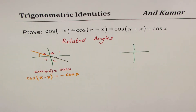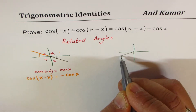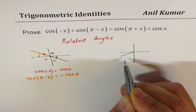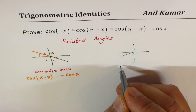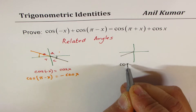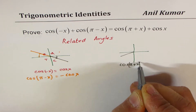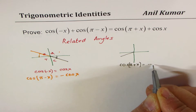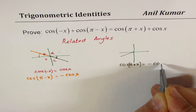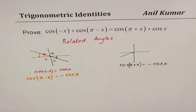Now let's look at the angles on the right-hand side. The first one is cos(π + x). π + x means you are in quadrant 3. In quadrant 3, cosine is negative, and therefore cos(π + x) equals negative cos(x). And cos(x) on its own is just cos(x).